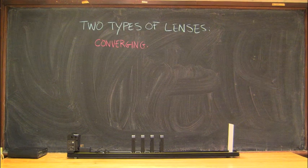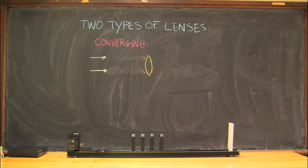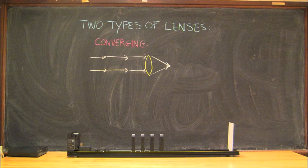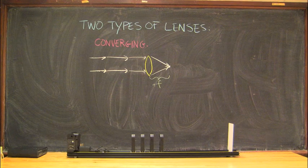There are two types of lenses. Converging lenses take light rays that are coming in parallel and bend them toward a single point on the other side of the lens. The distance to this point is called the focal length of the lens.